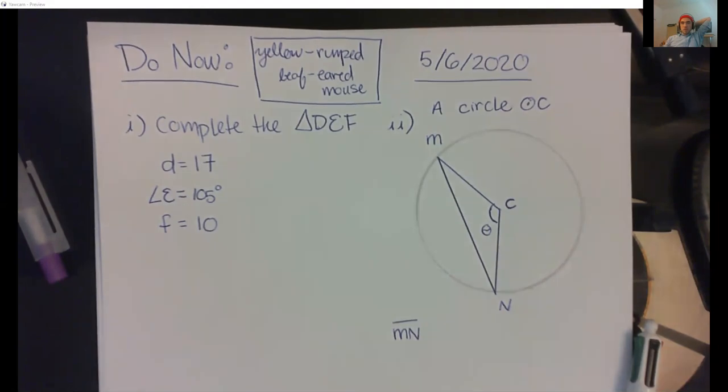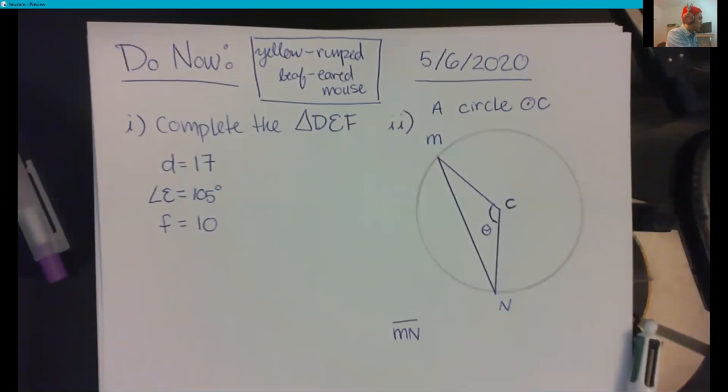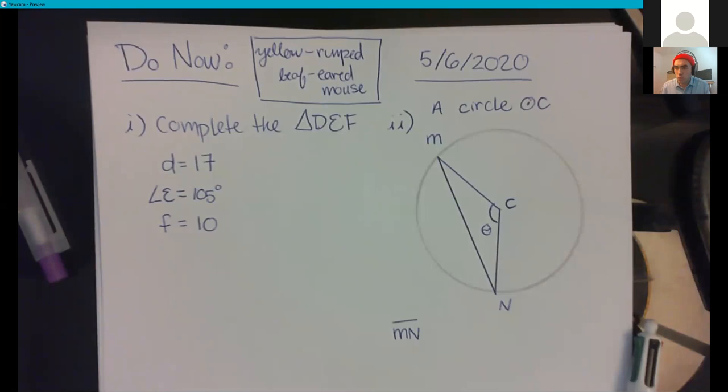Welcome. Today we are going to be working on a workshop for our last section: the law of sines and the law of cosines. Even though your textbook calls it one skill, it's really two skills, but it fits into the bigger picture of all trigonometry for us.